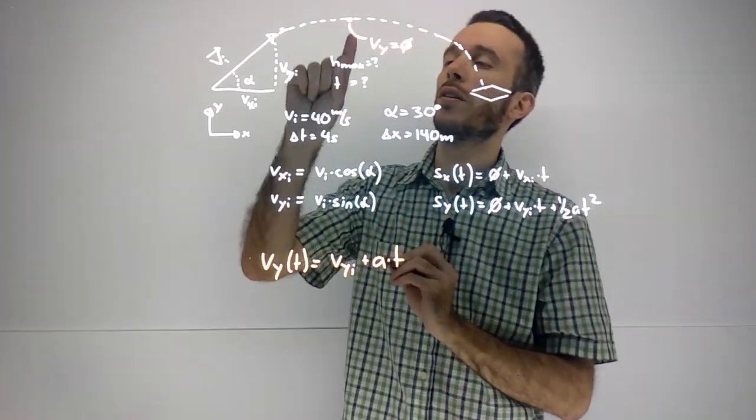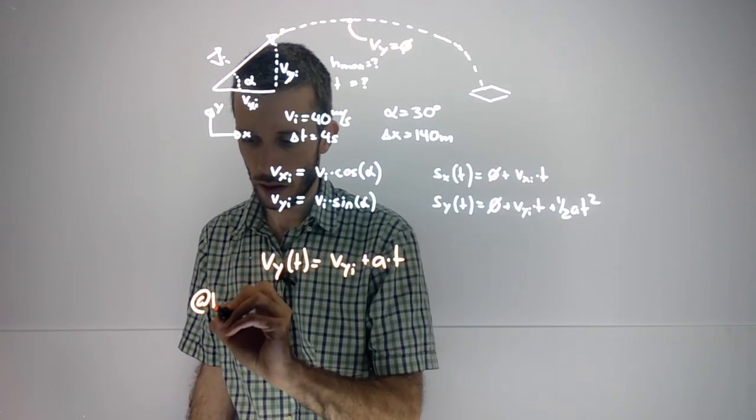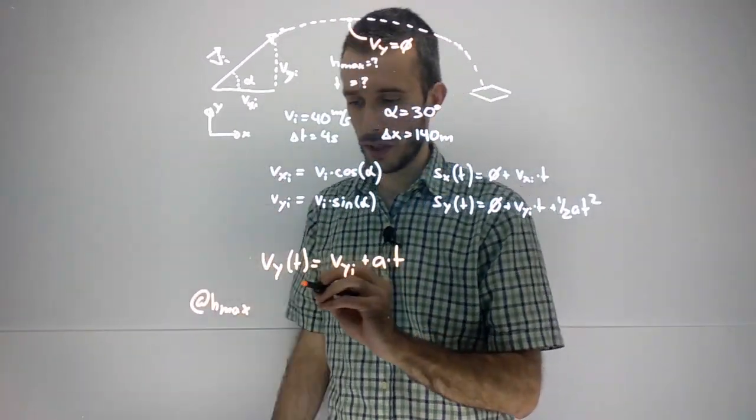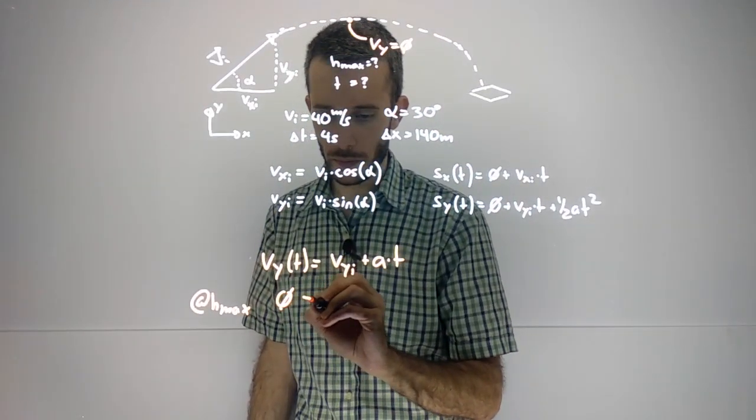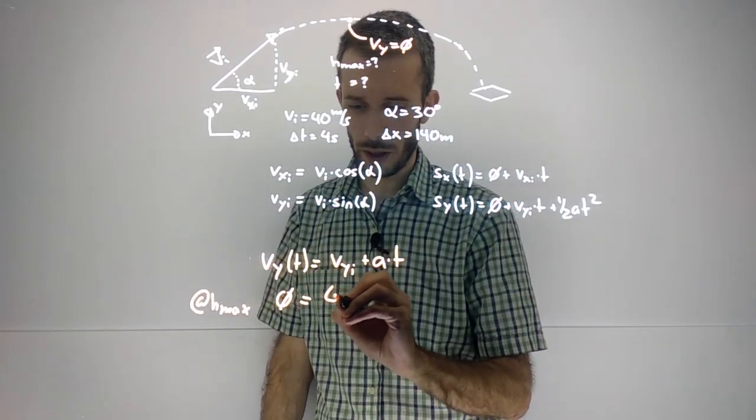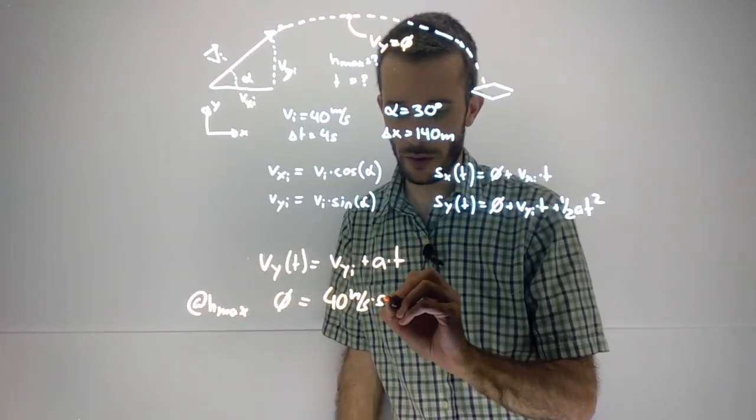We know that at the highest point the velocity will be zero. The initial velocity we have is 40 meters per second times sine of 30.